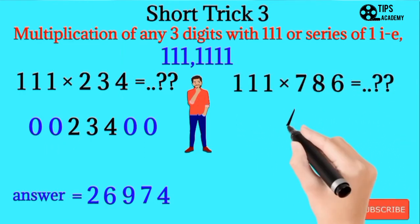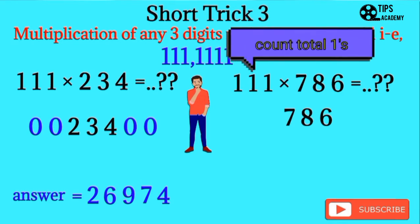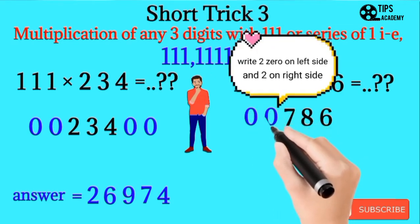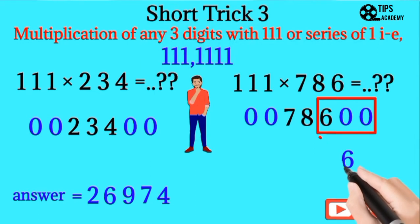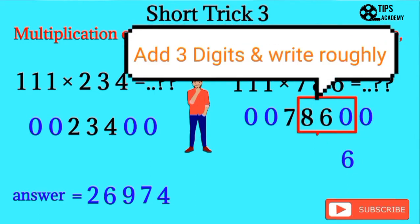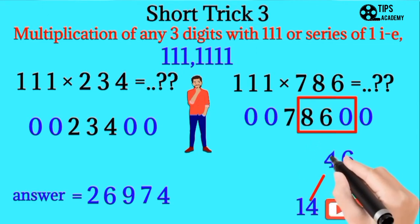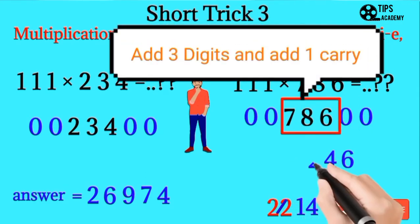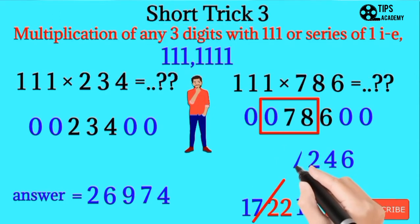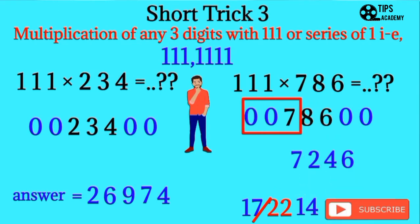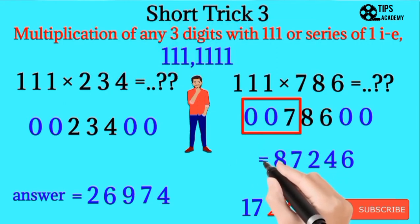For example, we want to multiply 111 and 786. We write 786 down and place two zeros on the left side and two zeros on the right side. Similarly, we add the first three digits and write them, then add the next three digits. We place 4 on the result and 1 will be carry for the next number. We add the next number and it will be 22; 2 will be carry. Add the next number, and similarly add the last three digits and write it. This will be the answer.